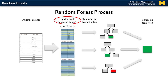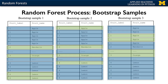Each tree will be built from a different random sample of the data called a bootstrap sample. Bootstrap samples are commonly used in statistics and machine learning. If your training set has n instances in total, a bootstrap sample of size n is created by repeatedly picking one of the n dataset rows at random with replacement — that is, allowing for the possibility of picking the same row again at each selection. You repeat this process n times, resulting in a bootstrap sample with n rows, but with possibly some rows missing and others occurring multiple times.